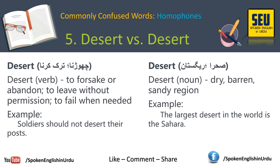Fifth one is desert vs desert۔ Pronunciation اور spelling دونوں same ہیں لیکن definitions بالکل مختلف ہیں۔ پہلا desert بطور verb مطلب ہے چھوڑنا، ترک کرنا — to forsake and abandon, or to leave without permission, to fail when needed۔ یعنی کسی کو اس وقت چھوڑ دینا جب اسے آپ کی سخت ضرورت ہو۔ For example: Soldiers should not desert their posts — سپاہیوں کو اپنی چوکیاں نہیں چھوڑنی چاہییں۔